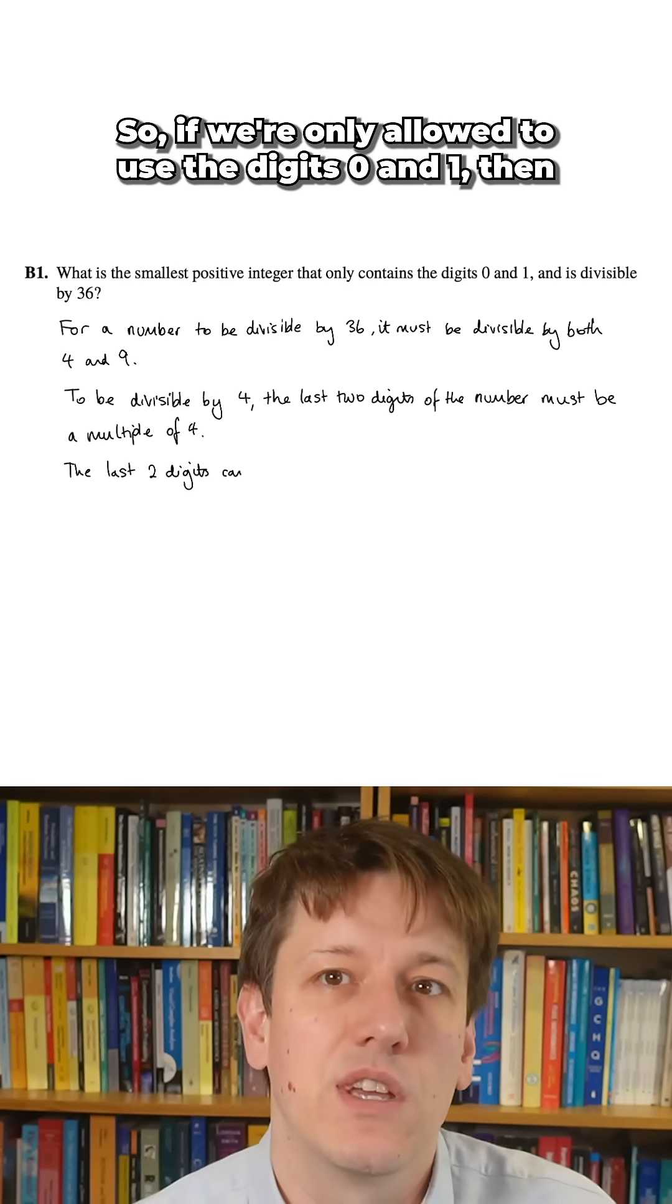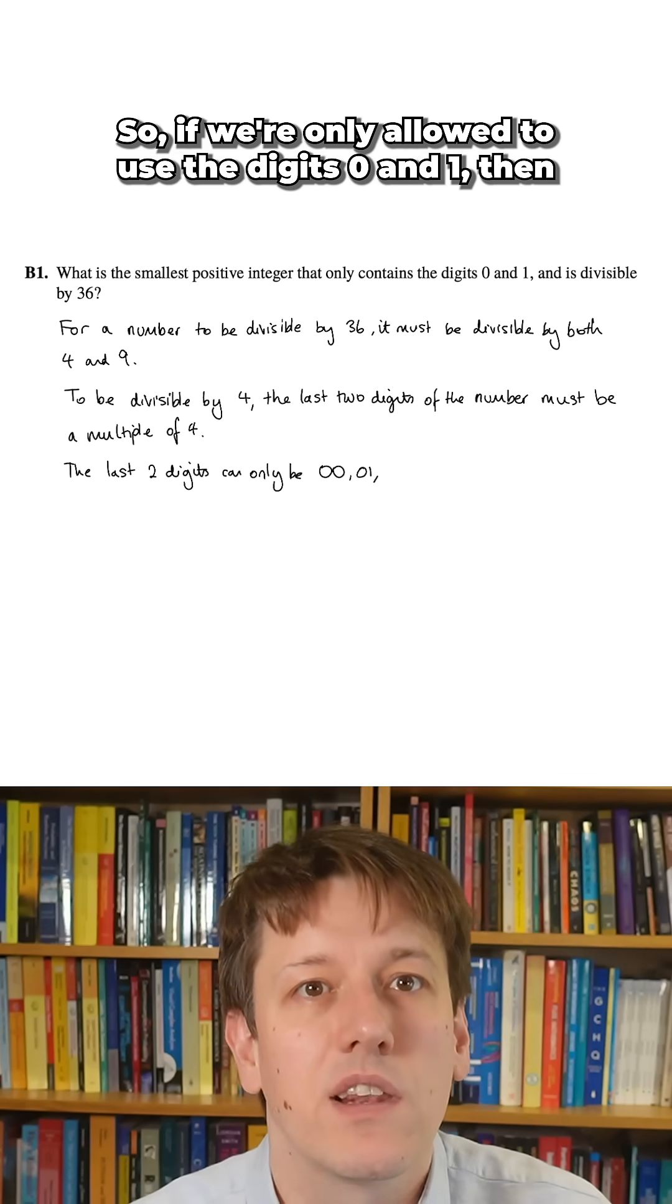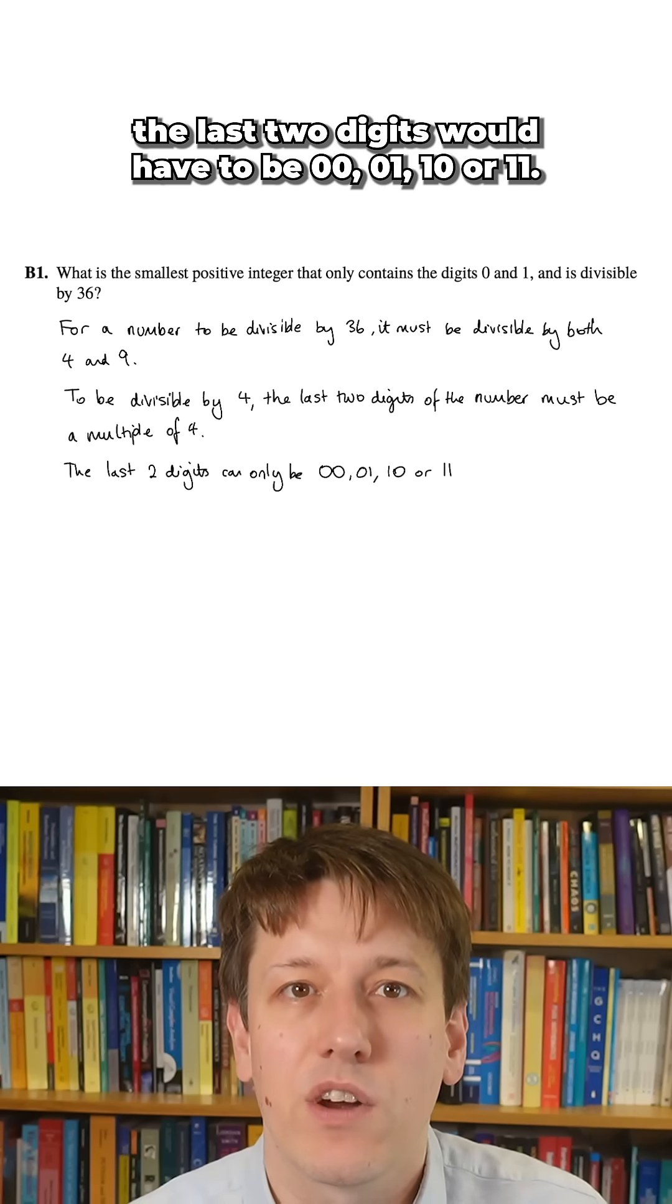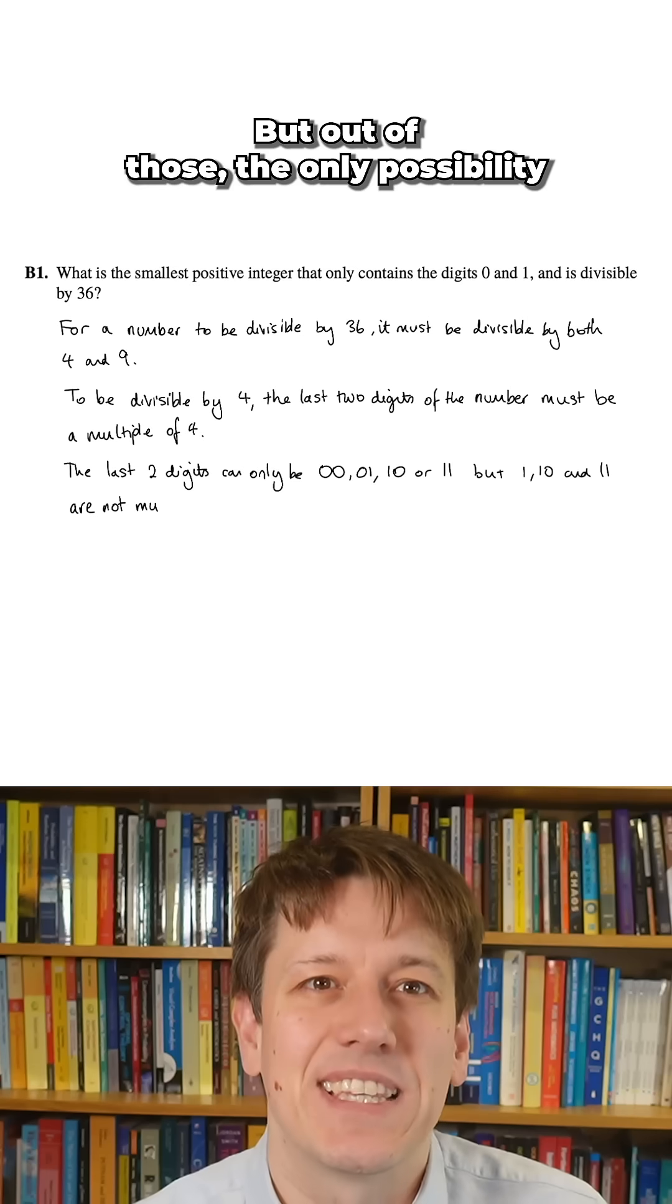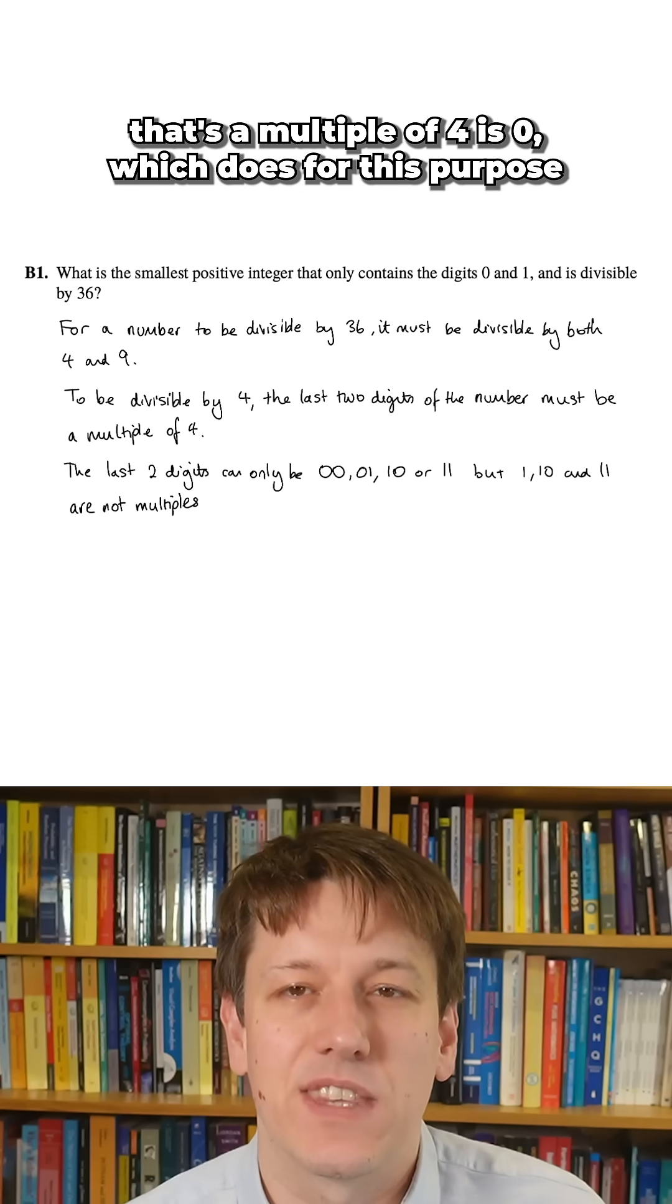If we're only allowed to use the digits 0 and 1, then the last two digits would have to be 00, 01, 10, or 11. But out of those, the only possibility that's a multiple of 4 is 00, which does, for this purpose, count as a multiple of 4.